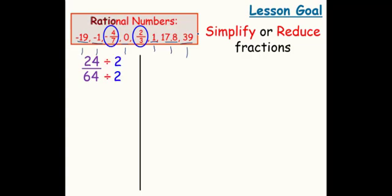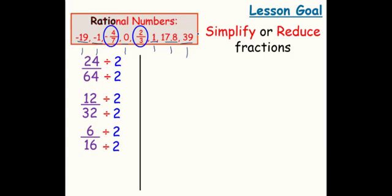You might have guessed 2. 24 divided by 2 is 12, 64 divided by 2 is 32. But this is not in simplest form, so we have to divide by 2 again. This gives us 6 and 16. Again, still not in simplest form, so we have to do it one more time. And now we have our fraction in simplest form.